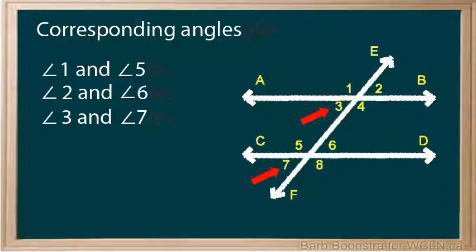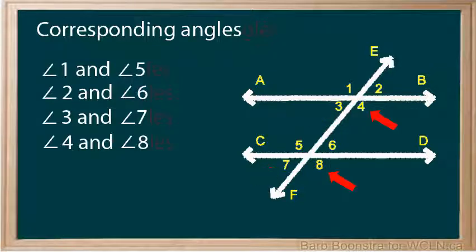Angles 3 and 7 are corresponding angles because they are both on the same side of the transversal but below the parallel lines. Angles 4 and 8 are also corresponding angles. Notice that there are four pairs of corresponding angles.